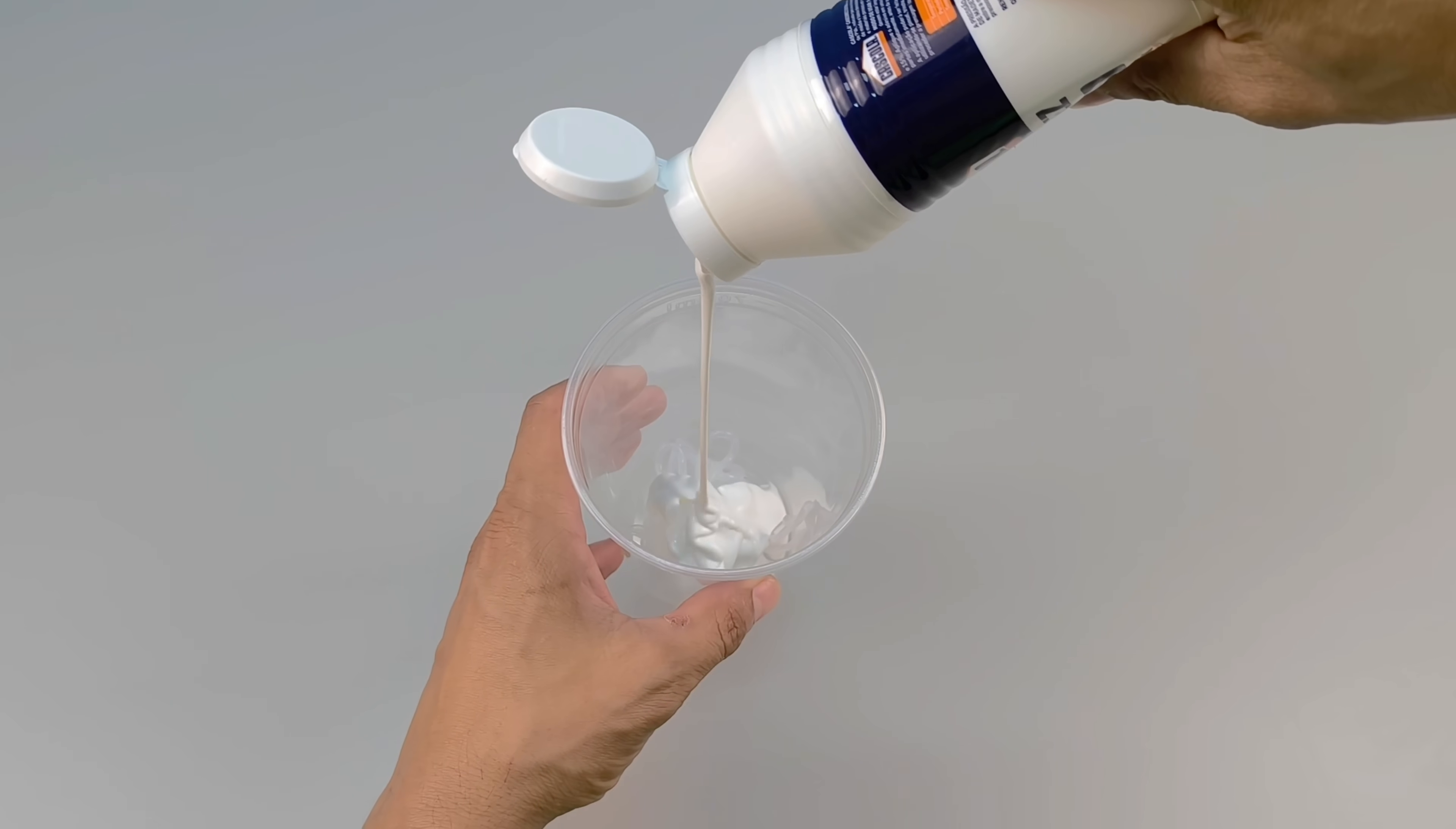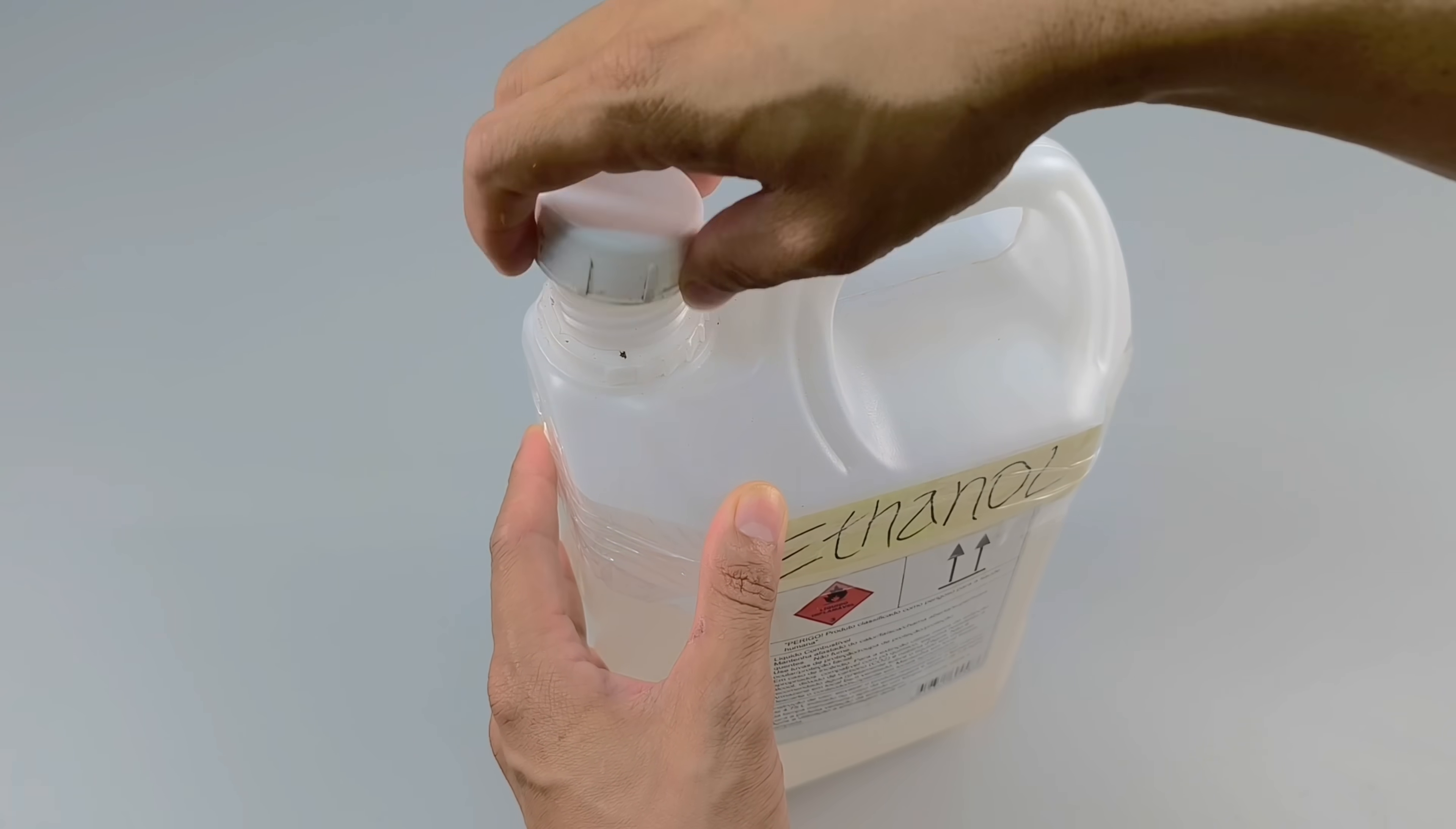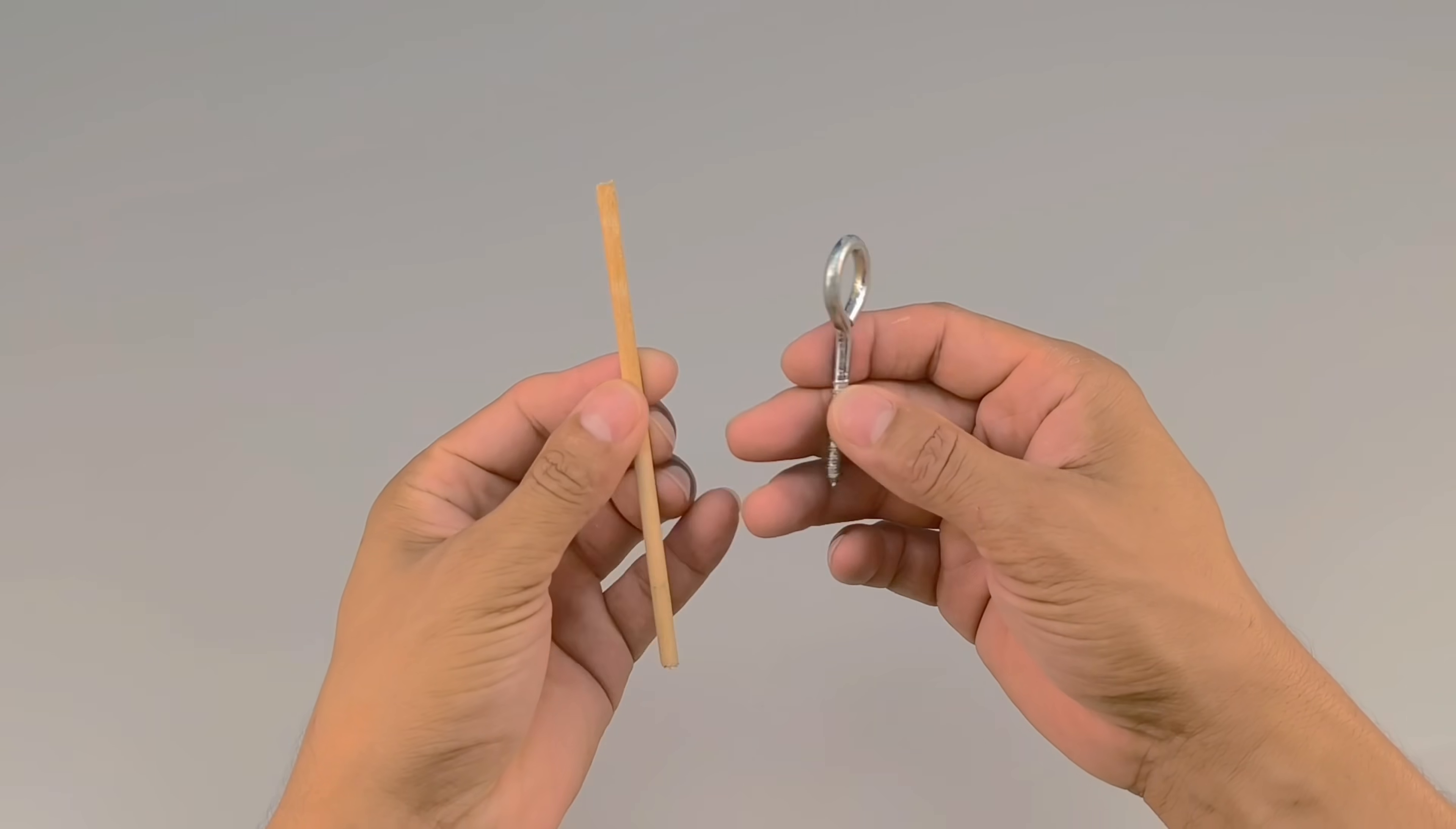At this point, we have two distinct components, but the transformation hasn't truly begun yet. This is where the third element comes in: ethanol. The proportion is important. I use twice as much ethanol as the silicone and glue combined. This liquid acts as a diluent, breaking down the initial resistance of the components and allowing them to integrate evenly. As it falls into the glass, the ethanol infiltrates the silicone and glue, and gradually their textures begin to change.